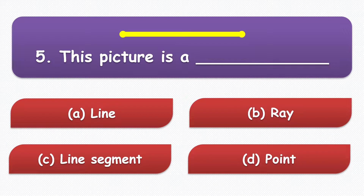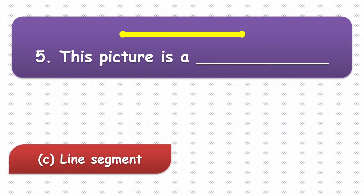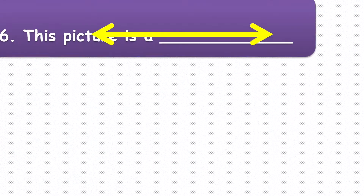Fifth question: this picture is a blank — identify it. The options are line, ray, line segment, and point. The correct answer for this question is line segment.